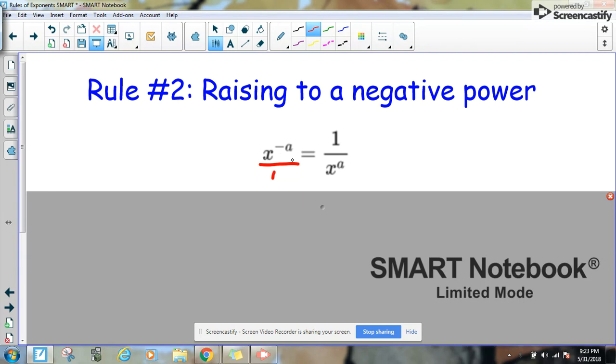If you have something raised to the negative power, essentially what happens is the entire term goes to the other side of the fraction. In this case, because the negative exponent's in the numerator, it would go to the denominator and becomes positive. So x to the negative a moves to the other side and becomes x to the positive a.